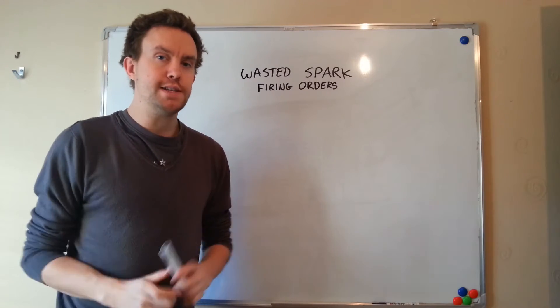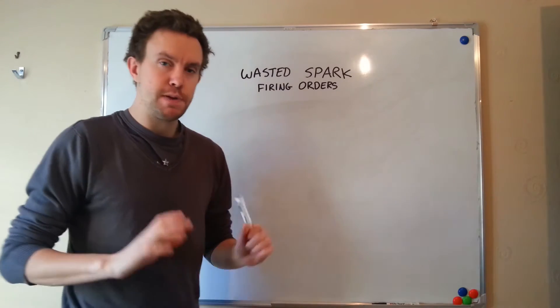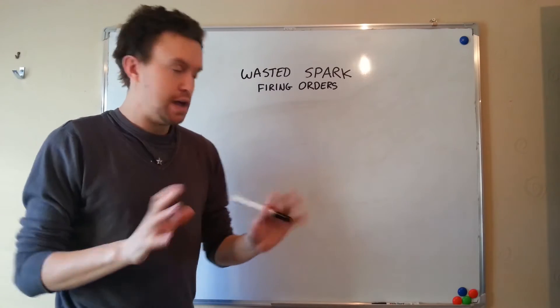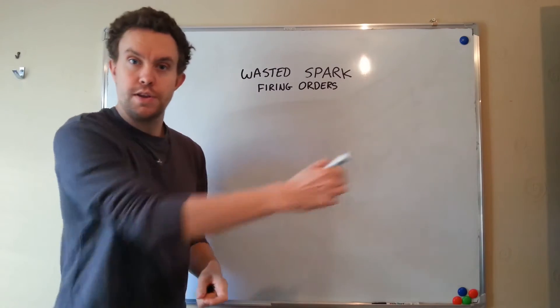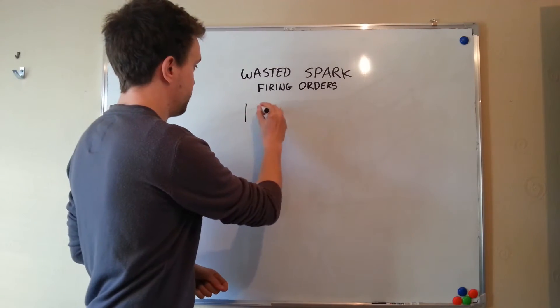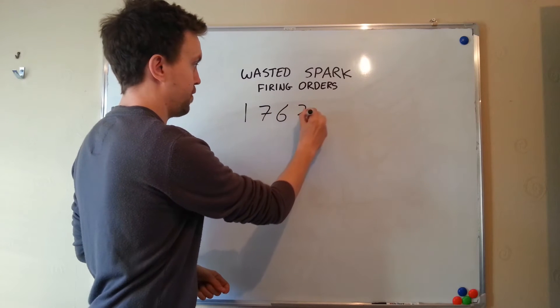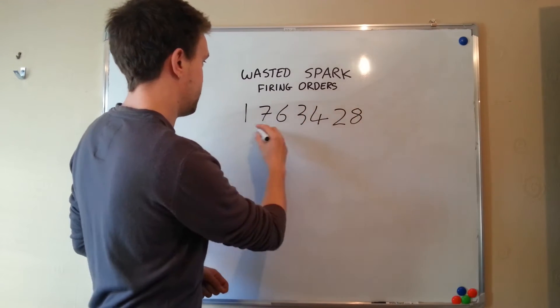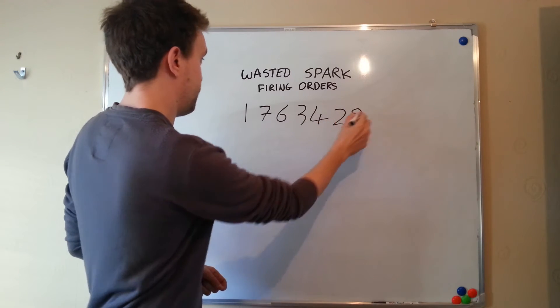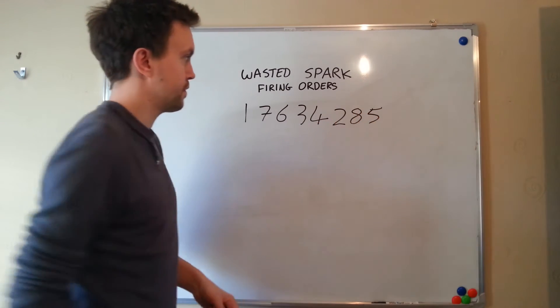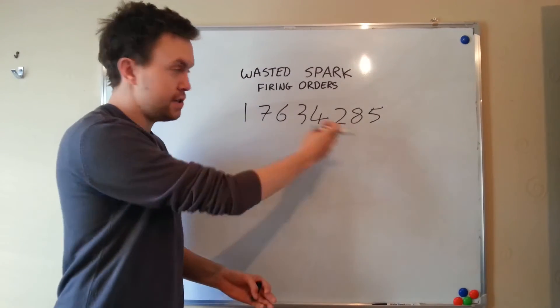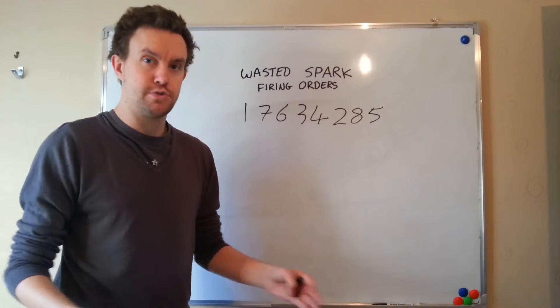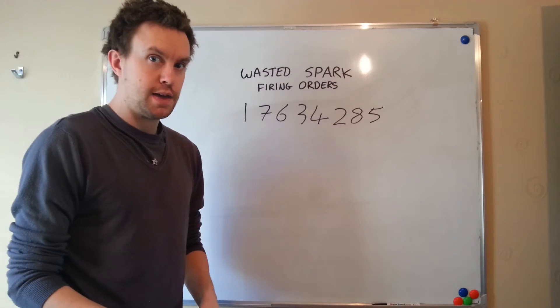Well, the first thing to do is to write down your firing order. And we're going to just pick a random firing order out of the air and we're going to write it down in the order that the engine fires in. One, seven, six, three, four, two, eight, and five. So here's our V8 engine cylinders firing order, which we can get from the internet or auto data or anywhere like that.